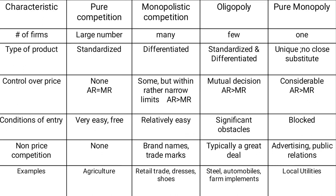Examples by market type: pure competition includes all agricultural products; monopolistic competition includes all brands, trademarks, dresses, and shoes; oligopoly includes steel, automobiles, and farm implements; and pure monopoly includes local utilities such as electricity and government tap water — both provided by the government as public facilities.